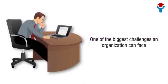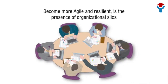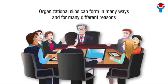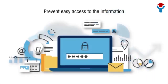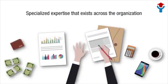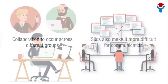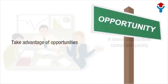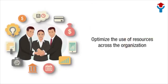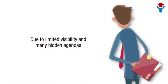One of the biggest challenges an organization can face when trying to work effectively and efficiently with a shared vision, or to become more agile and resilient, is the presence of organizational silos. Organizational silos can form in many ways and for many different reasons. Silos can be resistant to change and can prevent easy access to information and specialized expertise across the organization, which can reduce efficiency and increase both cost and risk. Silos also make it more difficult for communication or collaboration to occur across different groups. A siloed organization cannot act quickly to take advantage of opportunities or to optimize the use of resources, and is often unable to make effective decisions about changes due to limited visibility and many hidden agendas.